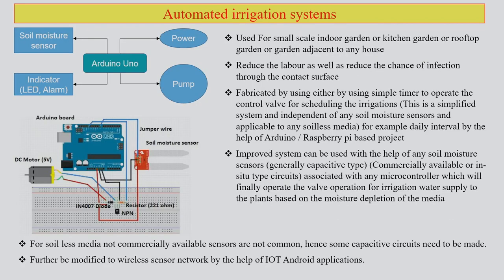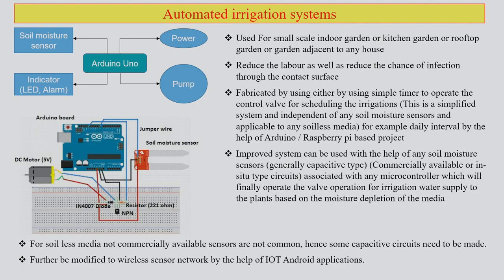Let us talk about another interesting aspect: automated irrigation systems. We have discussed drip irrigation and sprinklers in great detail. Now in the age of AI/ML, machine learning, and IoT, irrigation is one of the systems where these technologies are most interested in contributing. Today we will discuss how automated irrigation systems work and their basic principles.